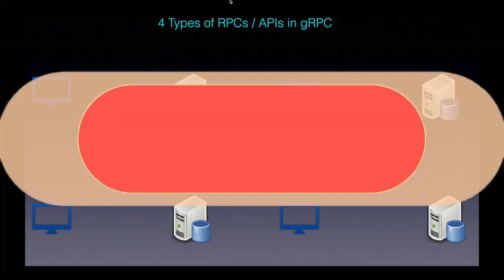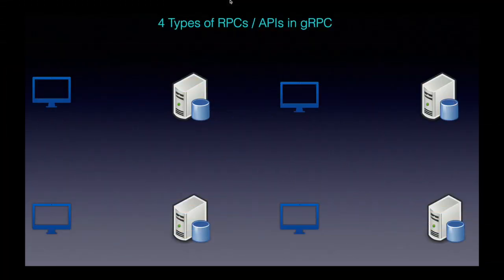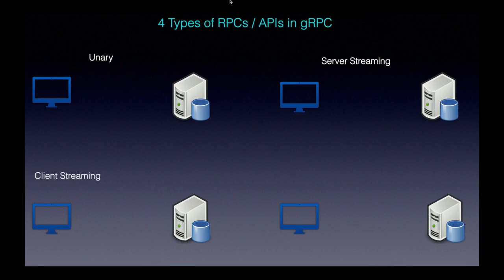Using the gRPC framework we can define four types of RPCs or APIs. Those are: unary, server streaming, client streaming, and bi-directional streaming.